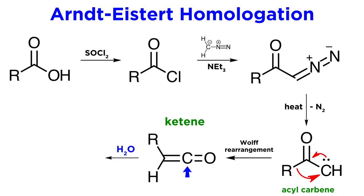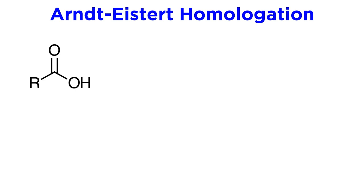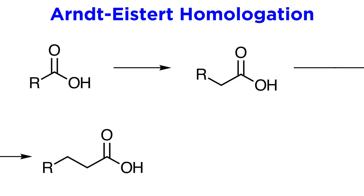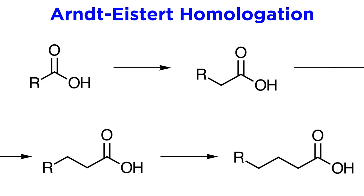Then hydrolysis will occur, where nucleophilic attack from water will bring us back to the carboxylic acid. And there we have our product, a carboxylic acid with one more carbon than we started with. The interesting thing about this reaction is that once homologation is complete, it can be repeated as many times as necessary to produce a carboxylic acid of any chain length. This makes it quite a valuable addition to our arsenal of synthetic techniques.